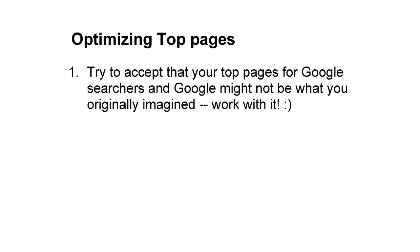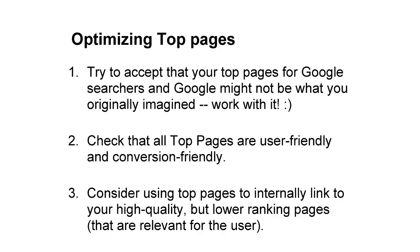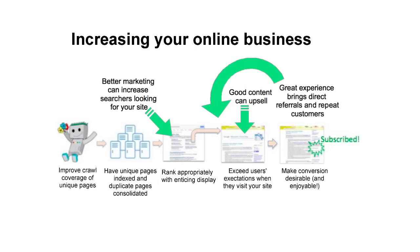To optimize top pages: first, accept that top pages for your users in Google might not be what you originally imagined. Second, check that all top pages are user-friendly and perhaps even conversion-friendly. Third, consider utilizing your top pages to internally link to your high-quality but lower-ranking pages. Search queries and ranking are an important step in bringing qualified visitors to your site and meeting your business goals, but remember they're not the only step. Better marketing can lead to more searchers looking for your product or service. Good content can upsell to your visitors. And providing a great user experience can bring direct referrals and repeat customers. Our team hopes you can make use of the search queries feature to improve your site. Thanks for your time.